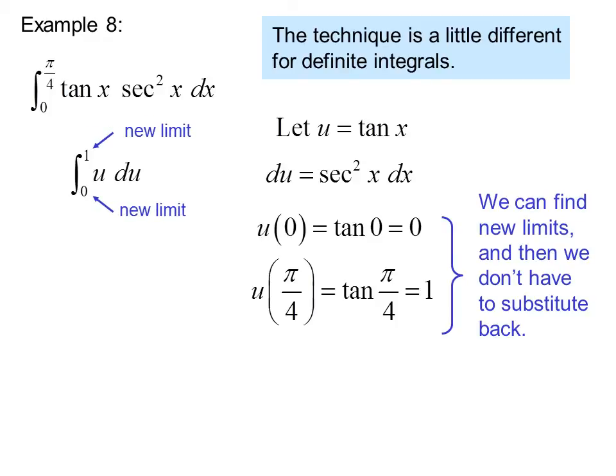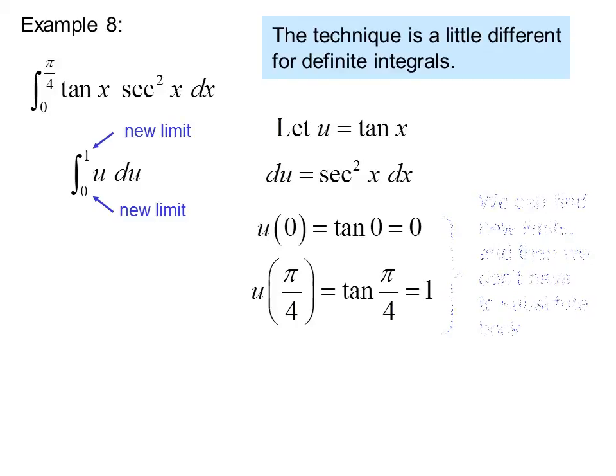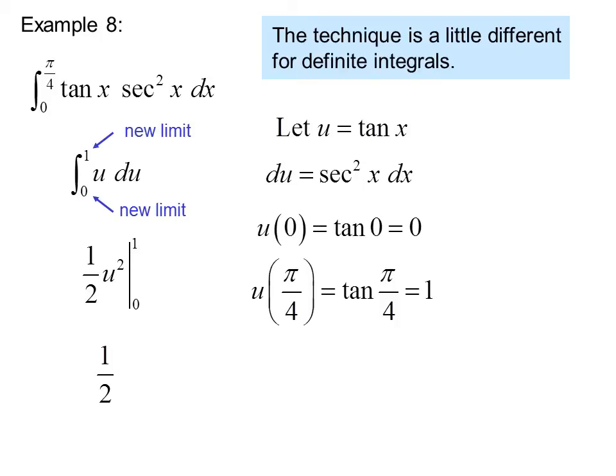So when we write the integral, we put in the new lower and upper limits. So we have the integral from 0 to 1 of u du, which is 1 half u squared from 0 to 1, or 1 half.